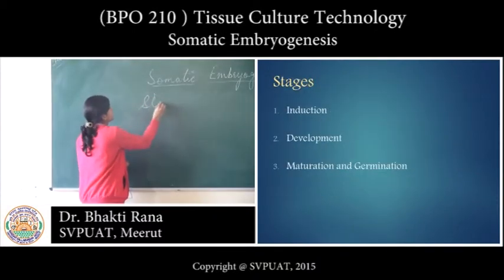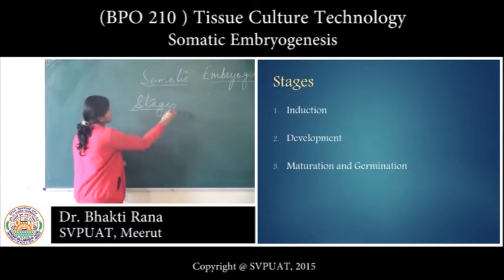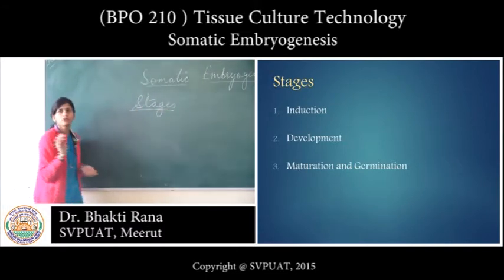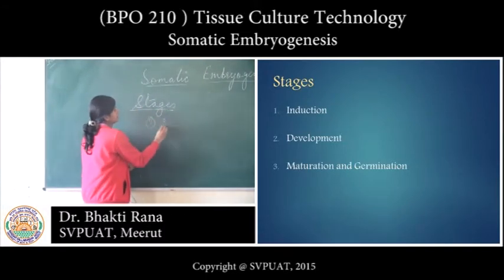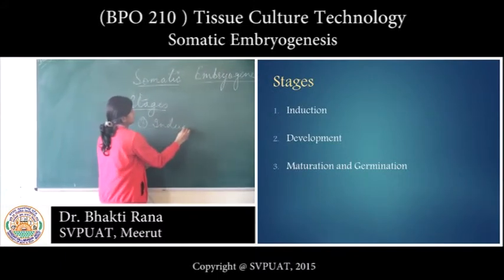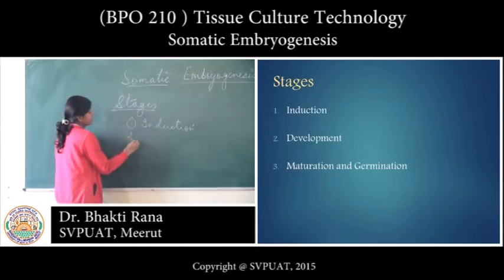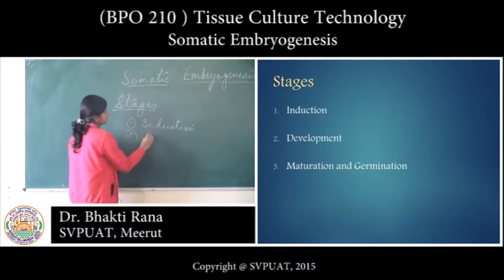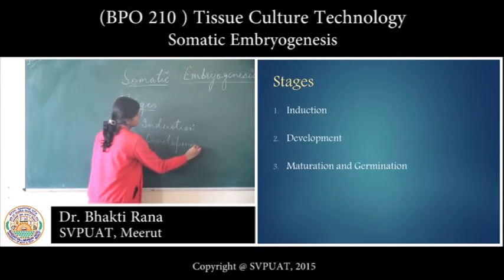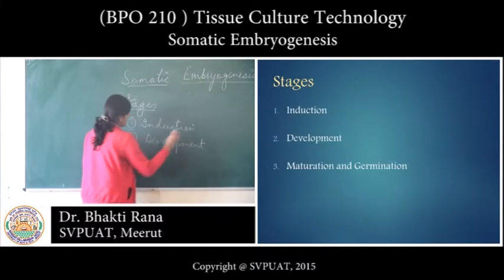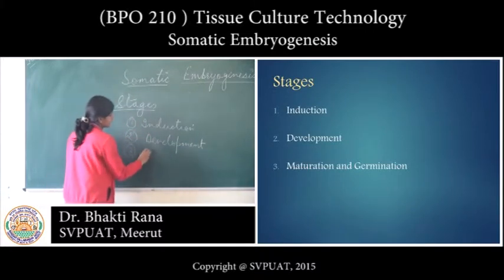There are three stages of somatic embryogenesis. The first stage is induction, the second is development, and the third is maturation.